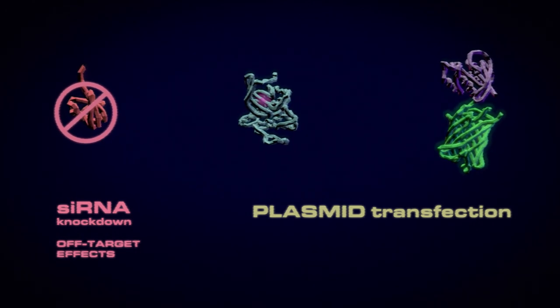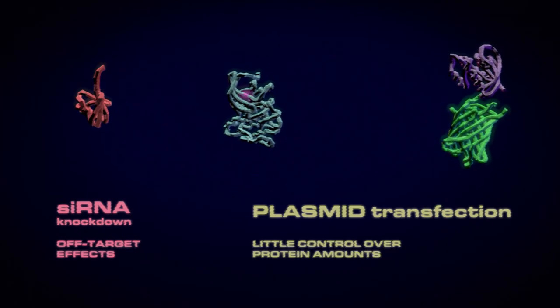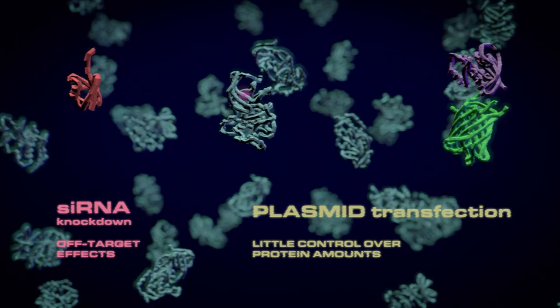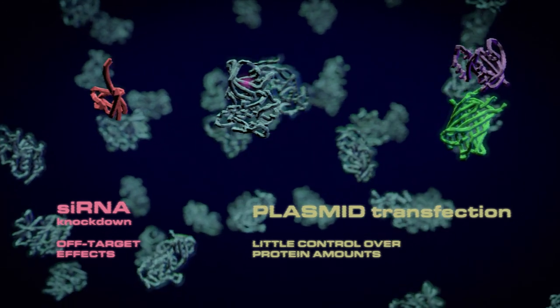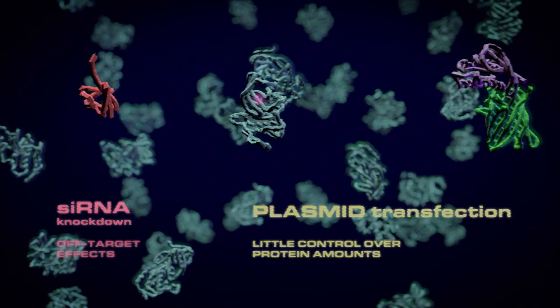siRNA has some issues with off-target effects and when you transfect in a plasmid it's very difficult to control exactly how much protein you introduce. Plus, both methods will only modify your cells for a few days.